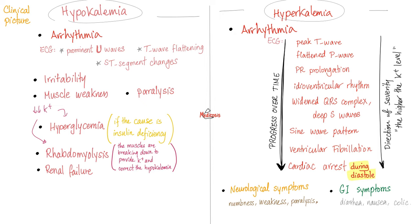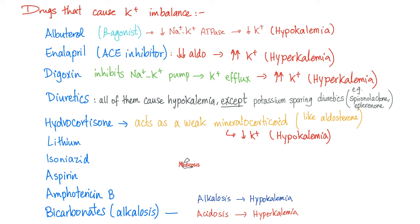Many medications can alter potassium balance. Beta agonists cause hypokalemia; beta blockers cause hyperkalemia. All diuretics waste potassium — except the potassium-sparing diuretics, which are anti-aldosterone. Because aldosterone hates potassium, a diuretic that inhibits aldosterone will spare potassium, causing hyperkalemia. Potassium-sparing diuretics include spironolactone, eplerenone, triamterene, and amiloride. Beta blockers and digoxin — which inhibit the sodium-potassium pump — cause hyperkalemia. When ACE inhibitors are given, aldosterone will not be produced; less aldosterone means more potassium. Cortisol has weak mineralocorticoid activity — too much cortisol acts like aldosterone, which hates potassium.